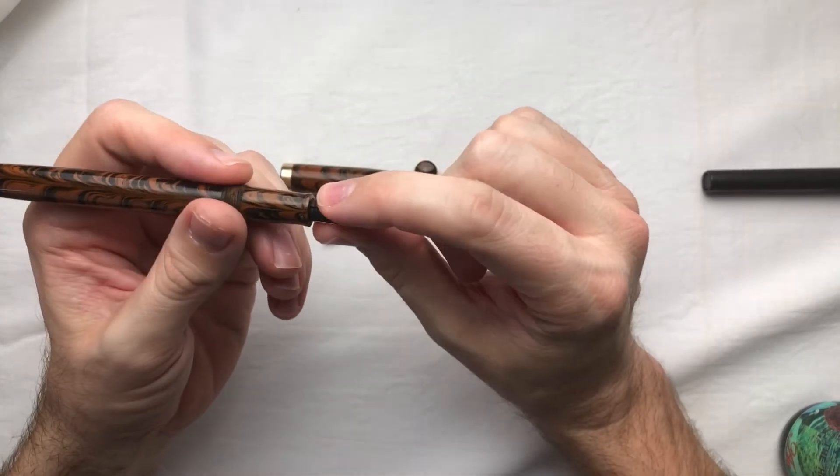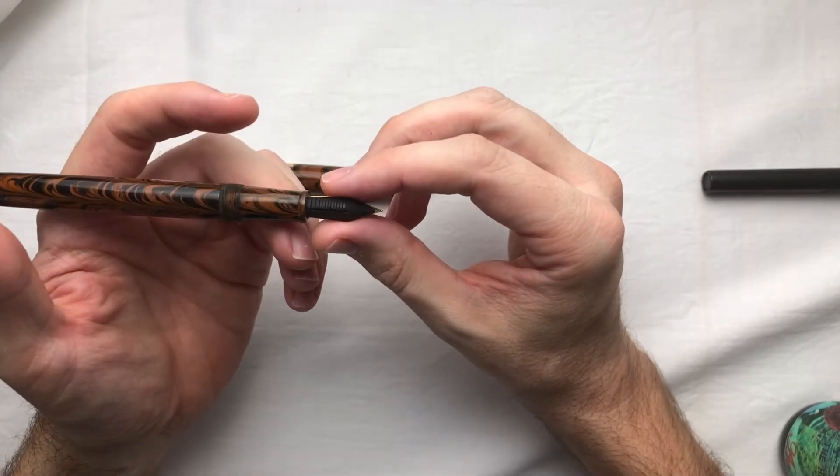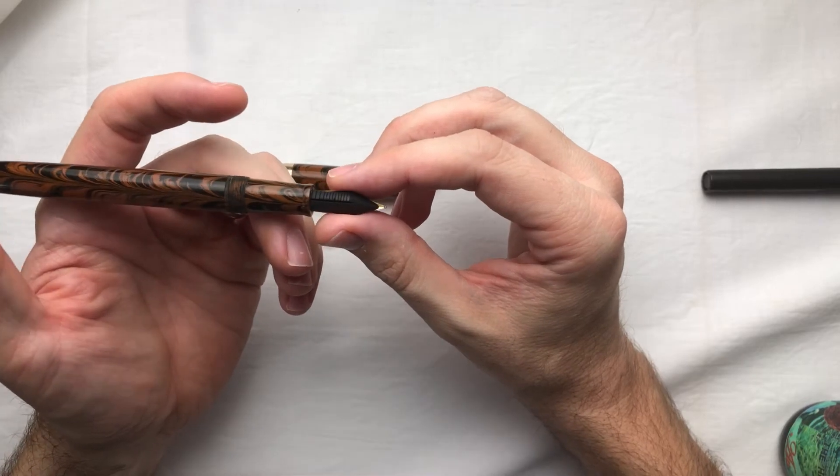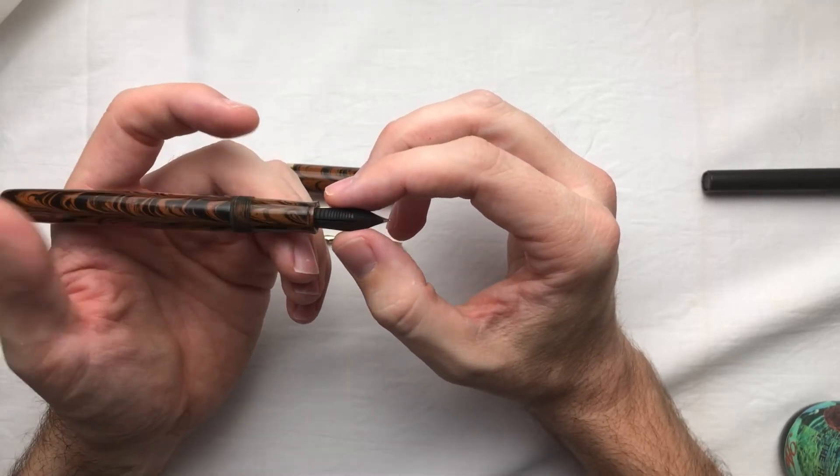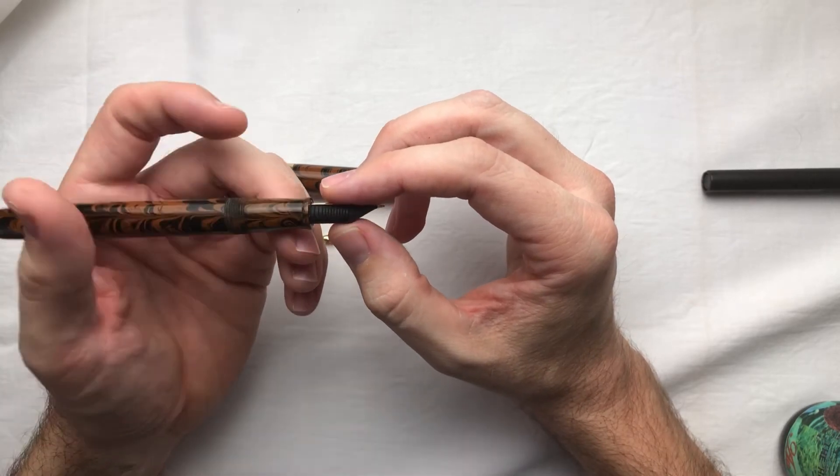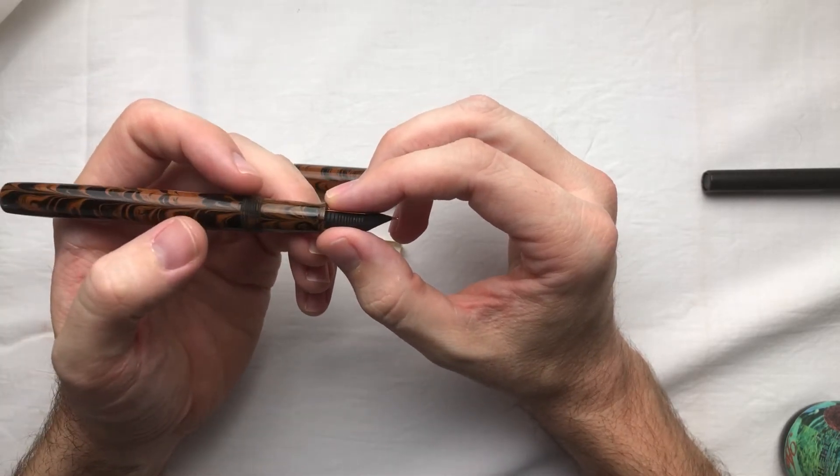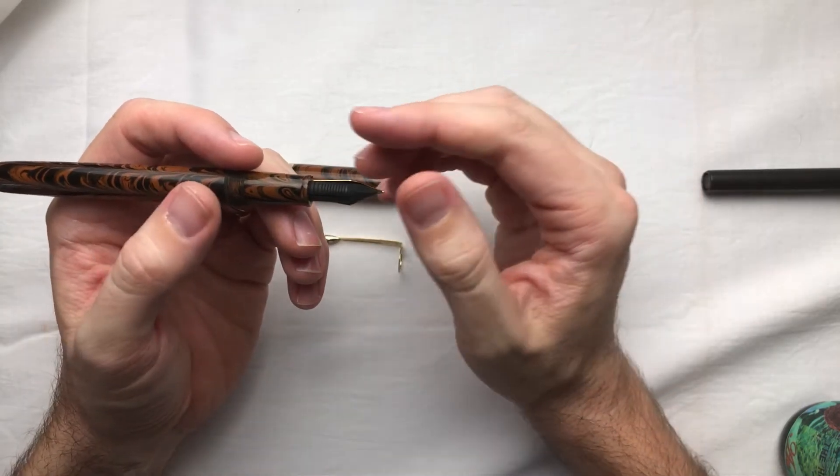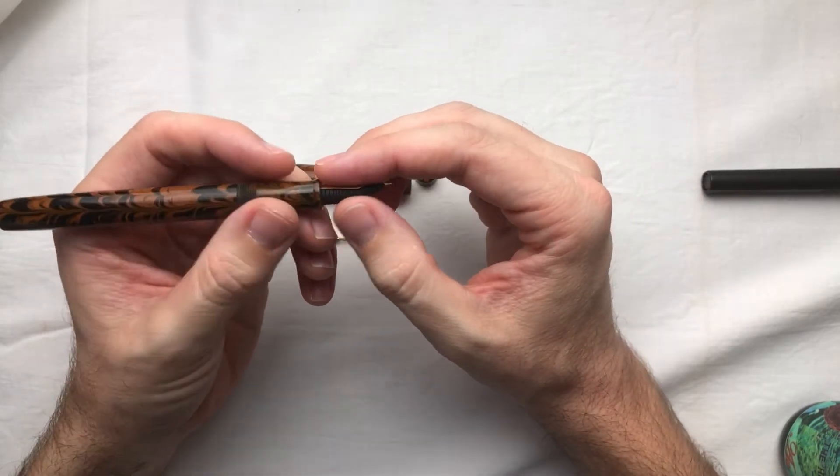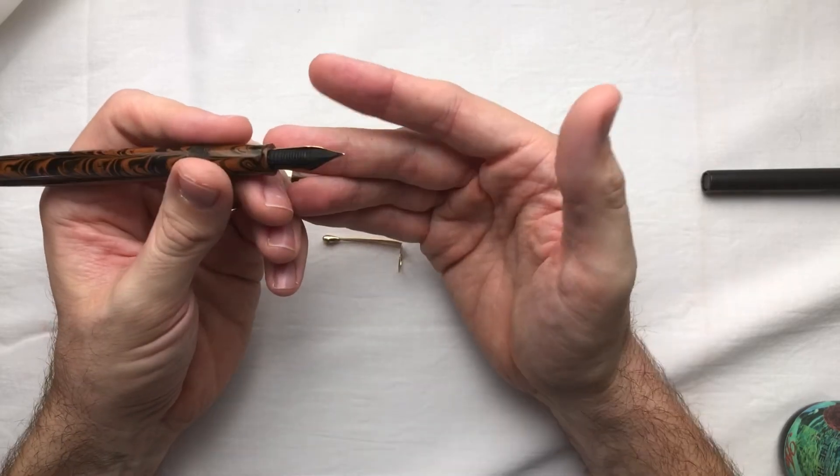The feed here is ebonite. I had some trouble with the ebonite feed in the last Fountain Pen Revolution pen that I used, the Jaipur. I still don't know how to pronounce that. J-A-I-P-U-R. I don't even remember how to spell it. To be honest, it wasn't that satisfying of a pen to work with. So hopefully this one will be better.